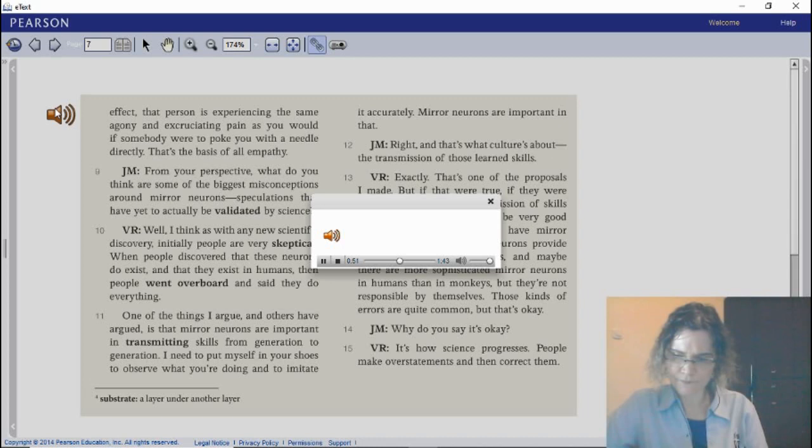One of the things I argue, and others have argued, is that mirror neurons are important in transmitting skills from generation to generation. I need to put myself in your shoes to observe what you're doing and to imitate it accurately. Mirror neurons are important in that. And that's what culture is about: the transmission of those learned skills. But if that were true, if they were responsible for all that transmission of skills and culture, monkeys should be very good at those things because they have mirror neurons. So clearly, mirror neurons provide the substrate for those skills, and maybe there are more sophisticated mirror neurons in humans than in monkeys, but they're not responsible by themselves.